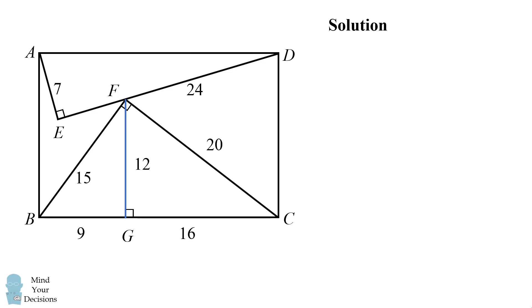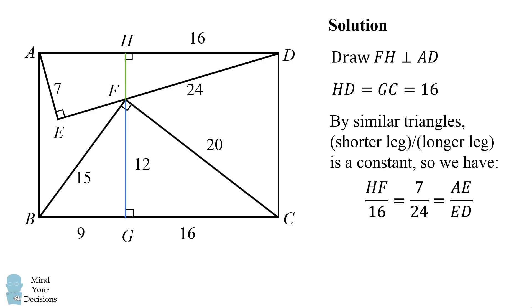Now, the key to this whole problem is to think inside the box. We'll draw FH to be perpendicular to AD. Now notice that HD is equal to GC, which is equal to 16. Now in this triangle AED, we've also created some similar triangles. By similar triangles, notice that the shorter leg of the triangle to the longer leg is a constant ratio.